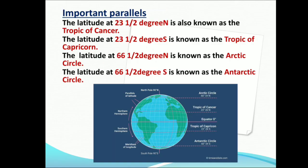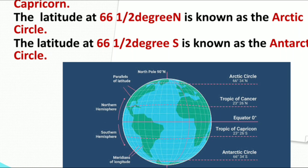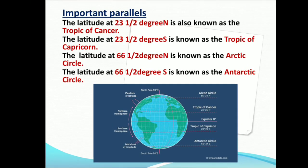Now I am explaining the important parallels. In the middle of the globe you can see a line called the equator. The line which is above the equator is known as the Tropic of Cancer. The line which is above the Tropic of Cancer is known as the Arctic Circle. The line which is below the equator is known as the Tropic of Capricorn, and the line which is below the Tropic of Capricorn is known as the Antarctic Circle. So the total number of important parallels on the globe is 7: North Pole, Arctic Circle, Tropic of Cancer, Equator, Tropic of Capricorn, Antarctic Circle, and South Pole.